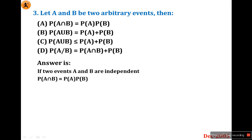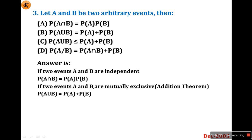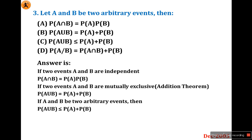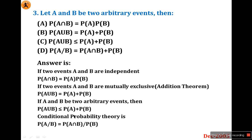Look at that. The first: if two events A and B are independent, then probability of A intersection B equals probability of A times probability of B. The second: if two events A and B are mutually exclusive, then probability of A union B equals probability of A plus probability of B. The third: for two arbitrary events, probability of A union B is less than or equal to probability of A plus probability of B. The last option uses plus instead of the correct conditional probability formula, so strike out option D. The answer is option C.